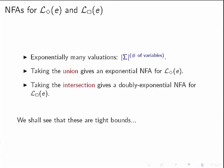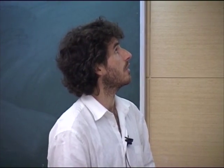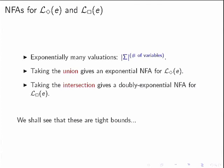Starting with a brute-force upper bound: when mapping variables to alphabet symbols, there can be exponentially many valuations — sigma to the power of the number of variables. Taking the union of all resulting expressions gives an exponential NFA for the possibility semantics. Taking the product automaton for the intersection gives a double-exponential NFA for the certainty semantics. These bounds turn out to be tight, but the real interest is in whether these difficulties are inherent.